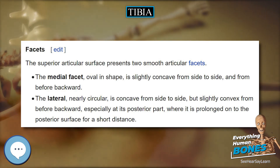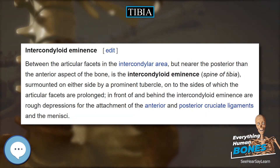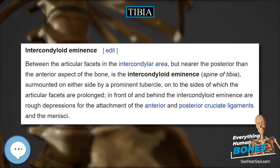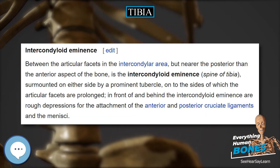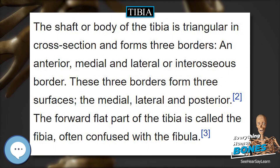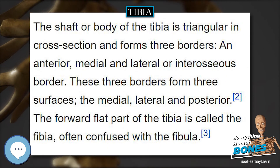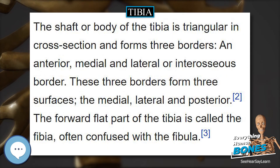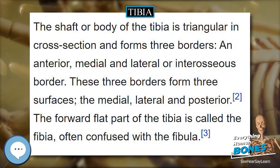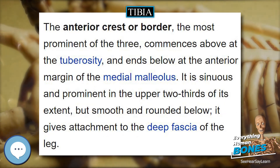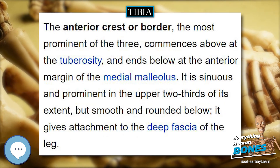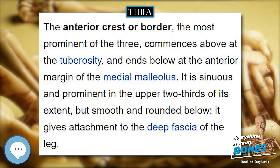Function. Muscle attachments and strength. The tibia has been modeled as taking an axial force during walking that is up to 4.7 times body weight. Its bending moment in the sagittal plane in the late stance phase is up to 71.6 body weight times millimeter.